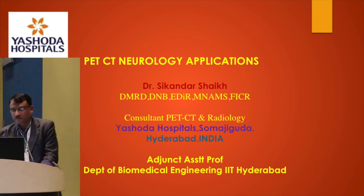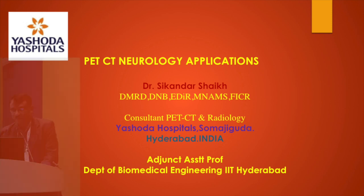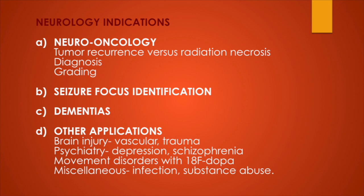Hello everyone, I am Dr. Sikandar. Today I will be speaking on PET-CT neurology applications. The most common and important application is neuro-oncology, which shows tumor recurrence versus radiation necrosis. This is one of the important things which is very difficult to be identified even on contrast MR, MR spectroscopy and other MR applications. So here PET is very important in distinguishing between tumor recurrence versus radiation necrosis.